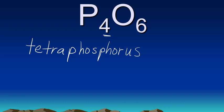And then six. The prefix for six is hexa. And then O is oxygen, but remember the second element we always change its ending to ide, so it becomes oxide. So here we have tetraphosphorus hexaoxide.